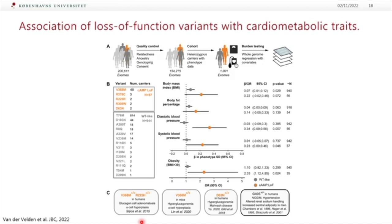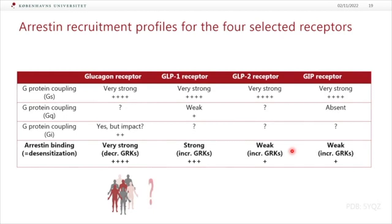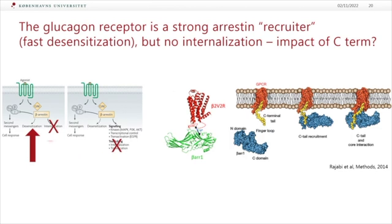Looking into the literature, many of these variants have been characterized before as being important, with phenotypes in mice or in humans. One variant is interesting: it turned out to be normal in cyclic AMP but impaired in arrestin recruitment, and it's actually quite frequent. There appear to be phenotypic alterations from having a variant with normal cyclic AMP but impaired arrestin. This got us to focus on arrestin recruitment — and I want to remind you again, it is really, really strong for the glucagon receptor.